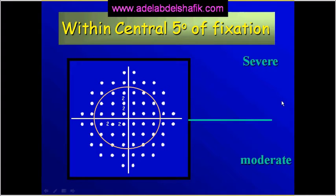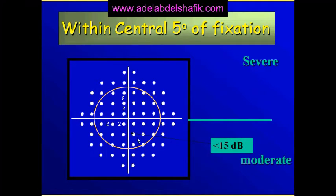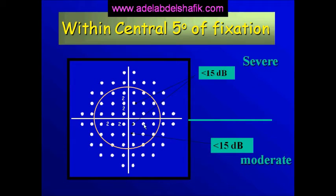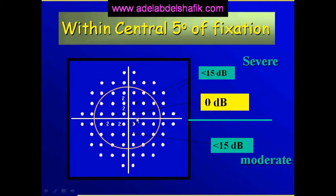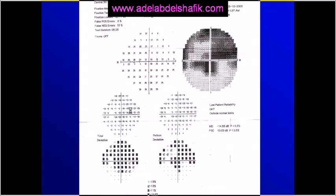The last criterion is to look at the sensitivity of the retina. In the central 10 degrees, if you find one point with sensitivity less than 15 decibels in the lower or upper hemisphere, it's moderate glaucoma. If you find one point in the upper hemisphere and another in the lower hemisphere with sensitivity less than 15 decibels, it's severe glaucoma. Additionally, if you find one point with a sensitivity of zero in the central 10 degrees, it's severe glaucoma.